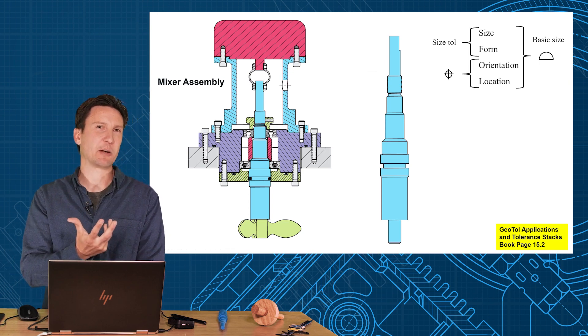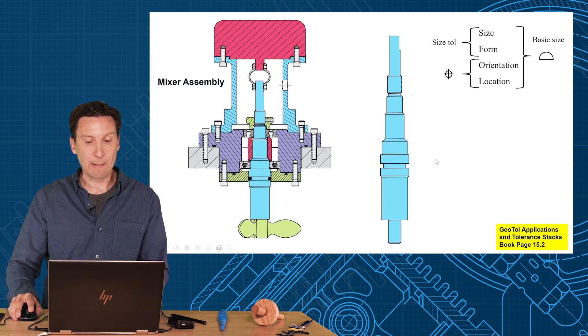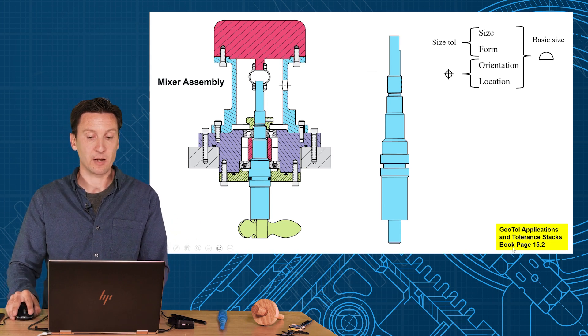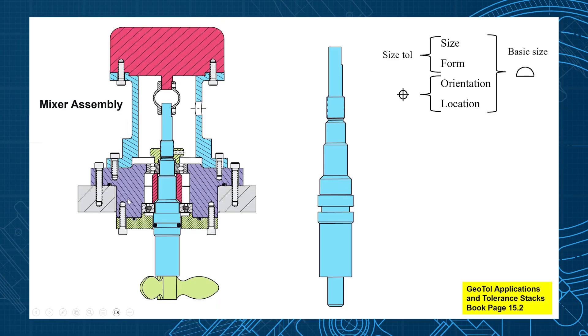Now what I found is the best way to explain geometric tolerancing is using concrete examples. So like I said this is an example mixer assembly for my GeoTol applications and tolerance stacks. It's in my book page 15.2. It's also in the online video program as well. So we have our main shaft here in blue that has two bearings cinched down onto it. So we put this lower bearing over the top and it seats on this bottom shoulder right here and fits very tightly on this lower diameter. There's a bearing spacer that doesn't have to be very coaxial. The only important thing is the spacer spaces the bearings up and down properly.